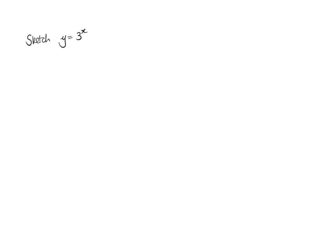The first thing we're going to do is sketch y equals 3 to the x. The two points you need for any exponential graph: where it crosses the y-axis gives (0, 1), and when x is 1, y is 3 — so we get (1, 3). We can sketch the graph starting near the x-axis, curving up, marking 1 on the y-axis and the point (1, 3). That's y equals 3 to the x.